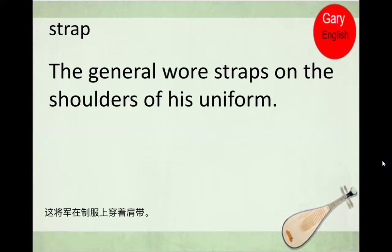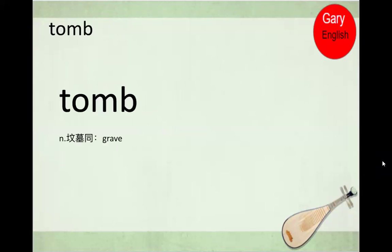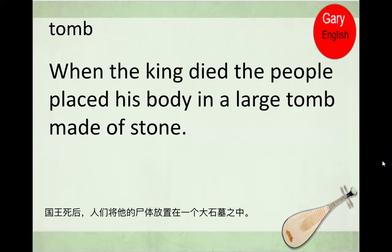Strap: The general wore straps on the shoulders of his uniform. Tomb: When the king died, the people placed his body in a large tomb made of stone.